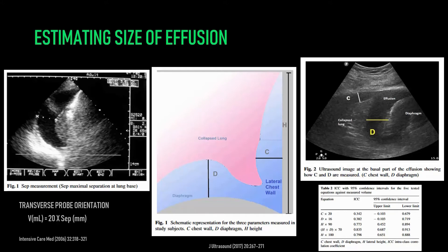However, many effusions are complex in appearance and track cephalad in addition to underneath the lung. So there are other techniques that use the height of the effusion from diaphragm to the top of the chest. In this case, you would measure the distance between the diaphragm and the remaining atelectatic lung segments, and also the height of the effusion from head to toe, and multiply that by 70 to get an estimate of the effusion size in milliliters. Either technique is acceptable, and both have about 80% accuracy in predicting effusion size.